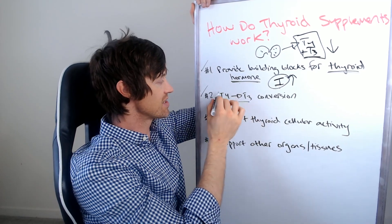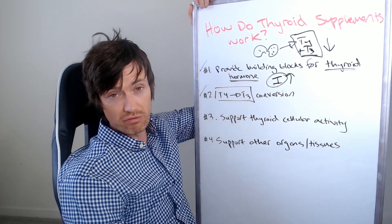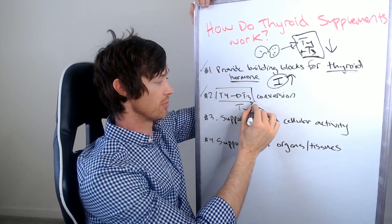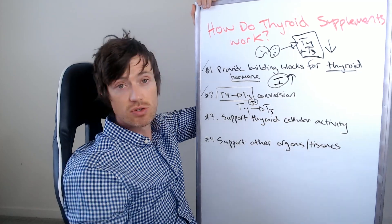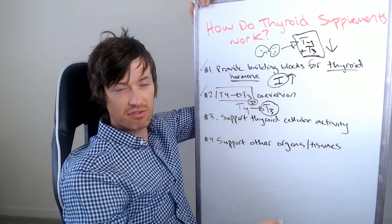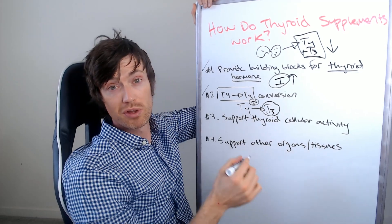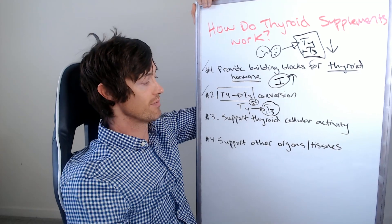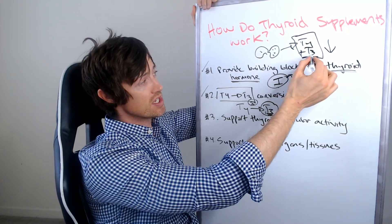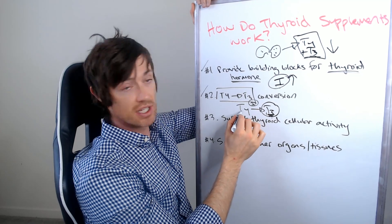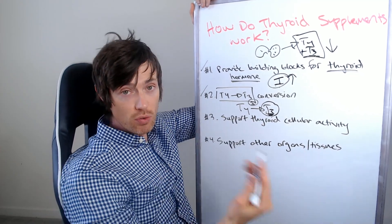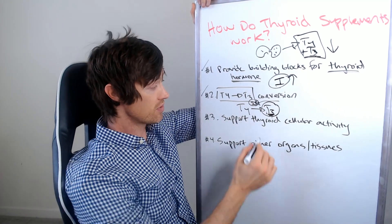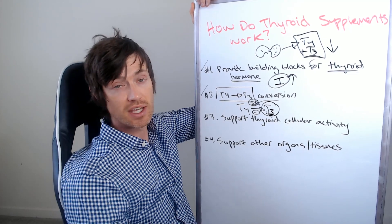Number two is that it can assist in something called T4 to T3 conversion. Now this is the process by which your body takes T4 and it changes it slightly, but actually cleaves off a little bit of an iodine and it turns that into T3. Now T3 is the most biologically active thyroid hormone and it is the thyroid hormone that you should concern yourself with. It is more important than T4, you know, by two or three hundred times. So you want as much T3 as possible. Now your body produces some T3 naturally, but the majority of it is produced via this conversion method. Now what you can do is there are actually many enzymes and proteins which help this process go along. There are also things which can negatively inhibit it, okay, so it can slow it down.